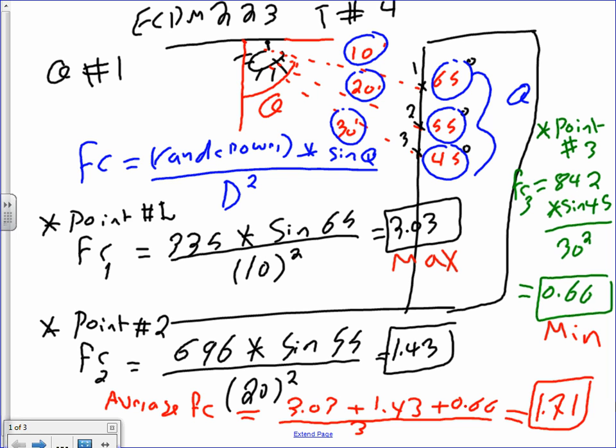Very simple, very easy, straightforward. One more time. There's 3 points: point 1, 2, and 3. There's point 1 calculation, point 2 calculation, point 3 calculation, and then I picked the maximum. Point 3 is the minimum. Point 1 is the maximum, just looking at the numbers, and the average, I just added the 3 numbers and averaged them.